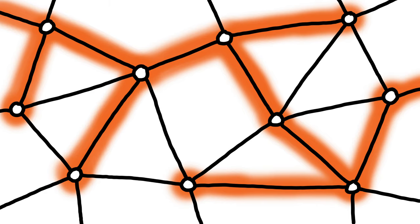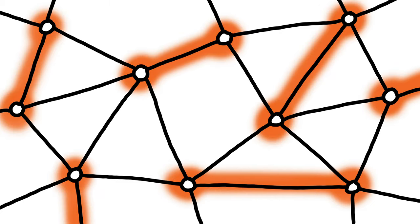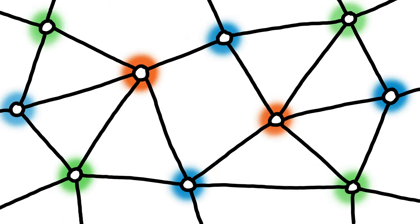Working together, the nodes are trying to accomplish something. Maybe we need to find a tree that can be used for spreading information, for routing, and for navigation. Or maybe we need to form pairs for collaboration and sharing resources. Or maybe we need to find the coloring of the nodes — that is, label the nodes with colors.